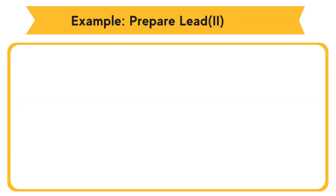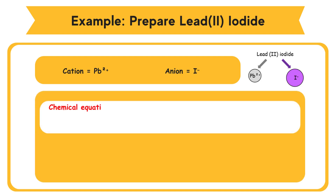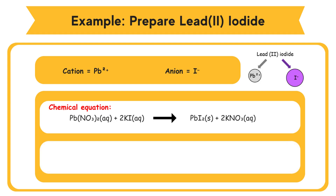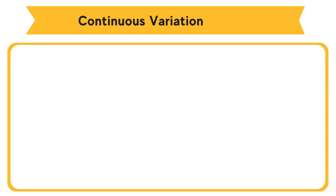Example: To prepare lead(II) iodide. Lead(II) iodide contains Pb2+ and I⁻. Lead(II) iodide is formed according to the following equation. Chemical equation: Pb(NO3)2(aq) + 2KI(aq) → PbI2(s) + 2KNO3(aq). Ionic equation: Pb2+(aq) + 2I⁻(aq) → PbI2(s). A yellow precipitate of lead(II) iodide is formed.